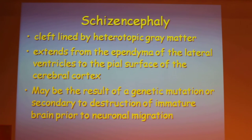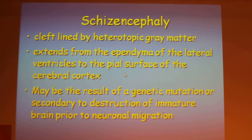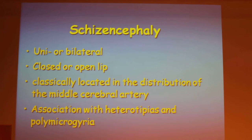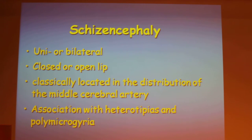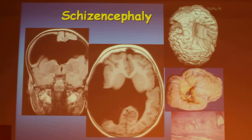Schizencephaly is a cleft lined with heterotopic gray matter that extends from the ependyma of the lateral ventricle to the pial surface of the cortex. It may result from a genetic mutation or secondary to destruction of the immature brain prior to neuronal migration. It can be uni- or bilateral, closed or open lip, and is classically located in the distribution of the middle cerebral artery. There is an association with heterotopias and polymicrogyria.